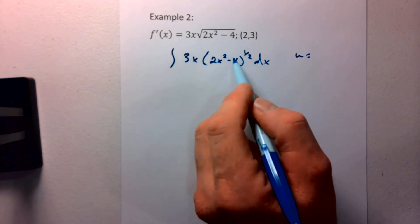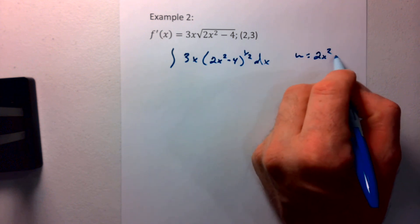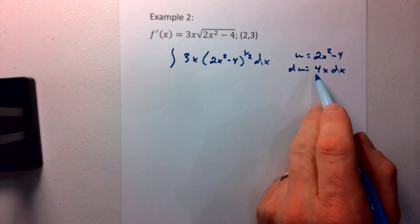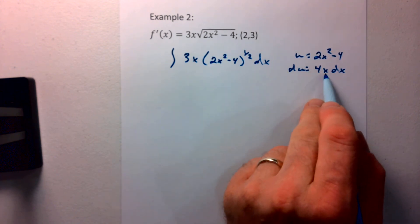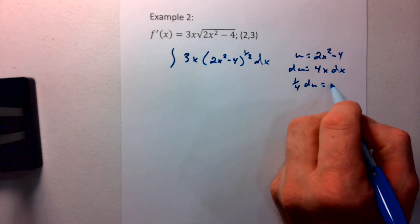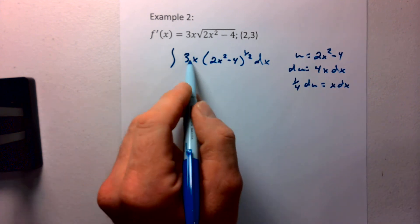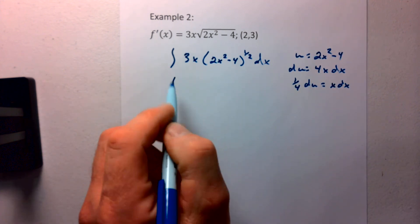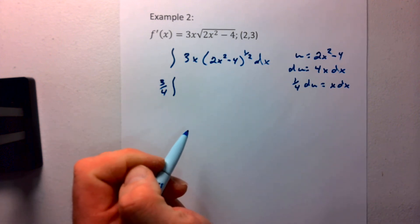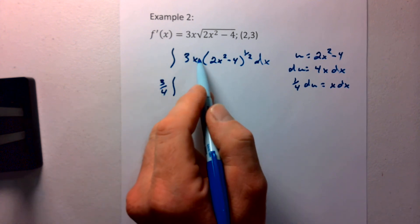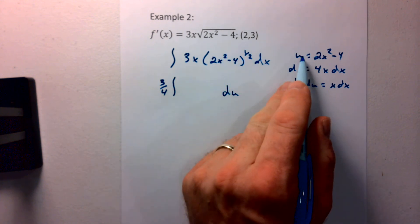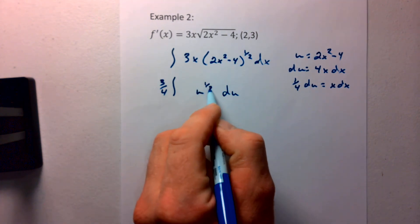So our u is going to be that quantity to the exponent. So 2x squared minus 4. du then is going to equal 4x dx. I have a 3x dx, not a 4x dx. So I need to take that 4 over with the du. So I get a fourth du equals x dx. So if I look at this integration, I have 3 times that 1 fourth. So I get 3 fourths as my coefficient there. My x dx goes out as a du. And 2x squared minus 4 is my u. So I have u to the 1 half du.